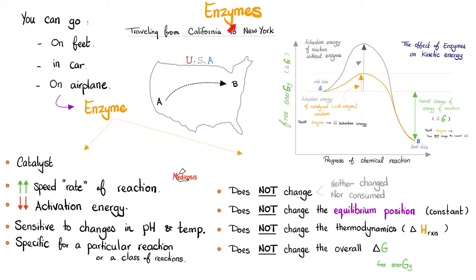Enzymes are catalysts. Enzymes speed up the rate of the reaction. They lower the activation energy, making it easier to jump over the hill — lowering the barrier. Enzymes are not altered by the reaction; they are not changed, not consumed. They do not change the equilibrium position, the thermodynamics, or the overall free energy of the reaction.